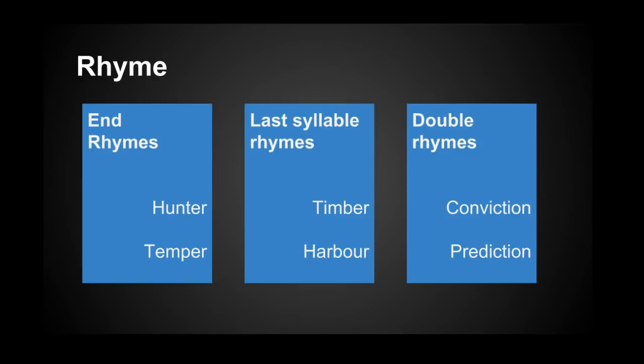On the other hand, 'timber' and 'harbor' end with the exact same syllable — 'ber'. Therefore, we could say that this is an example of last syllable rhyme. If the last two syllables of a pair of words have similar sounds, such as 'conviction' and 'prediction', then we can refer to it as a double rhyme.